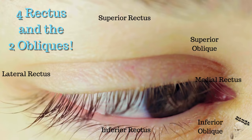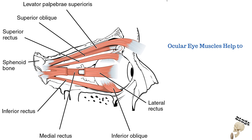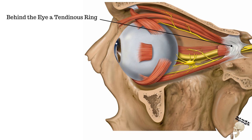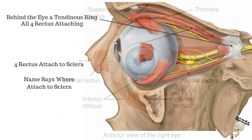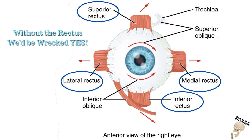Superior forces, turn your iris this way. Ocular eye muscles help you see — not acuity, but movement. Behind the eyes, a tendon ring: all four rectus attaching. Four rectus attached to sclera — superior rectus, inferior rectus, medial rectus, lateral rectus. Without the rectus, we need rectus.